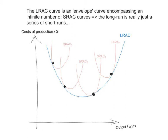Throughout this video I've spoken about the long run average cost curve, so let's take a moment to discuss it. The long run average cost curve is an envelope curve encompassing an infinite number of short run curves. The long run is really just a series of short runs — a firm is never really in the long run. Once you increase all of your factors of production, you simply move into another new short run. The curve shown in blue, labeled LRAC, is the long run average cost curve, encompassing all of the infinite short run average cost curves.